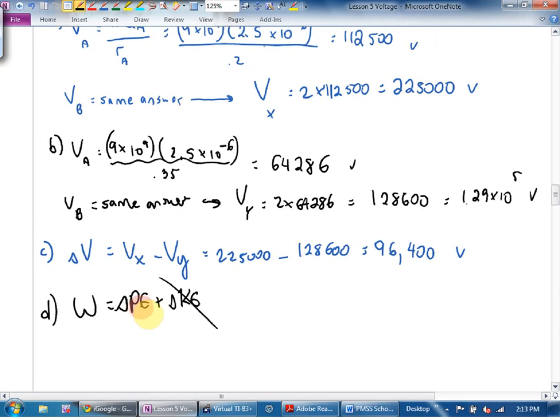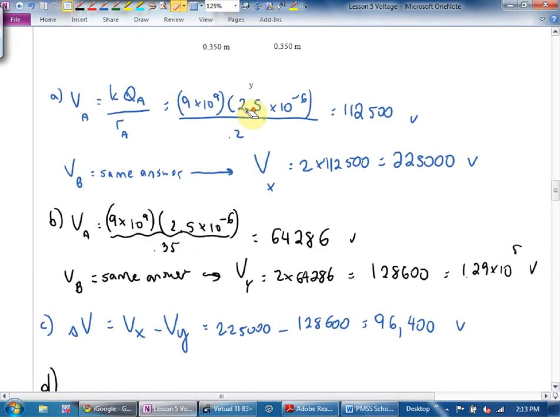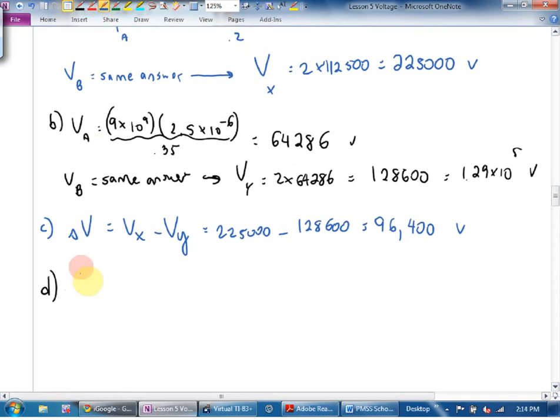In moving from here to here, we've just calculated we traveled through 96,400 volts. And do you remember how we defined volts? We defined volts as energy per coulomb. I think that means the change in voltage is going to be the change in energy per Coulomb.